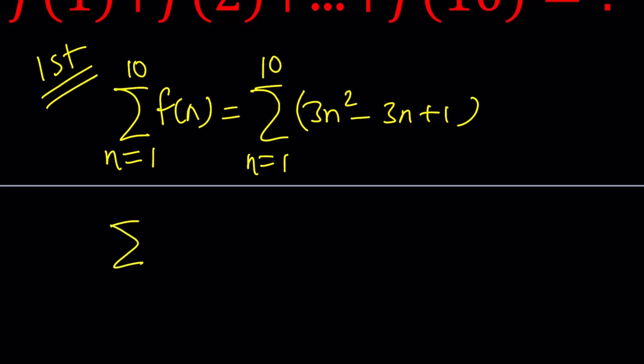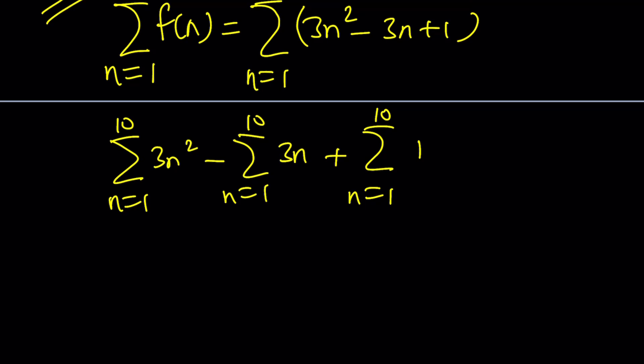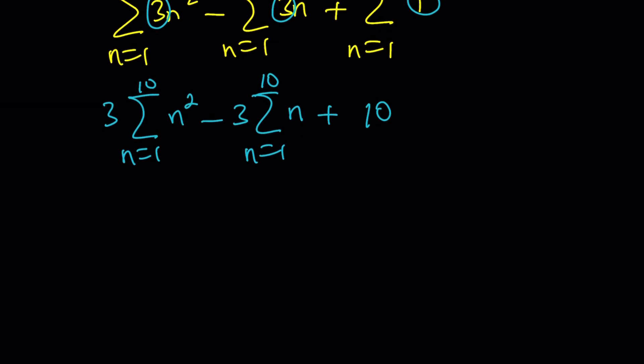Sigma notation allows us to separate these, so we can write it as 1 through 10, 3n squared minus 1 through 10, 3n plus 1 through 10, 1. And then using each of the properties of sigma, first of all, we can go out and take these numbers out. So we're going to get 3 times sigma n squared minus 3 times sigma 1 through 10, n, and finally 1 through 10. And that's just 10, because you're basically writing the one 10 times and add, which means 10 times 1.